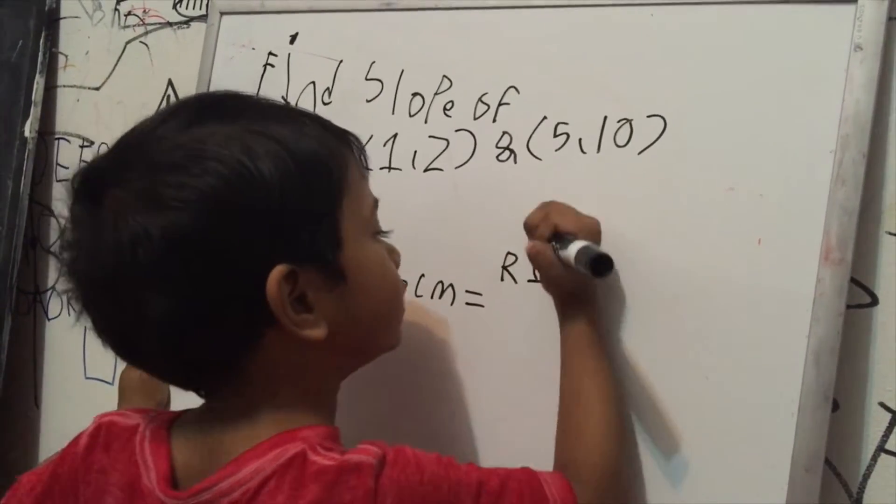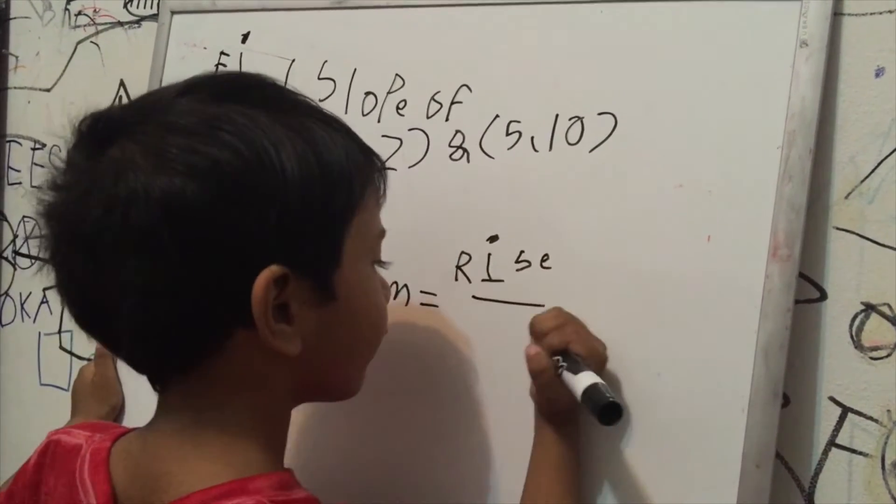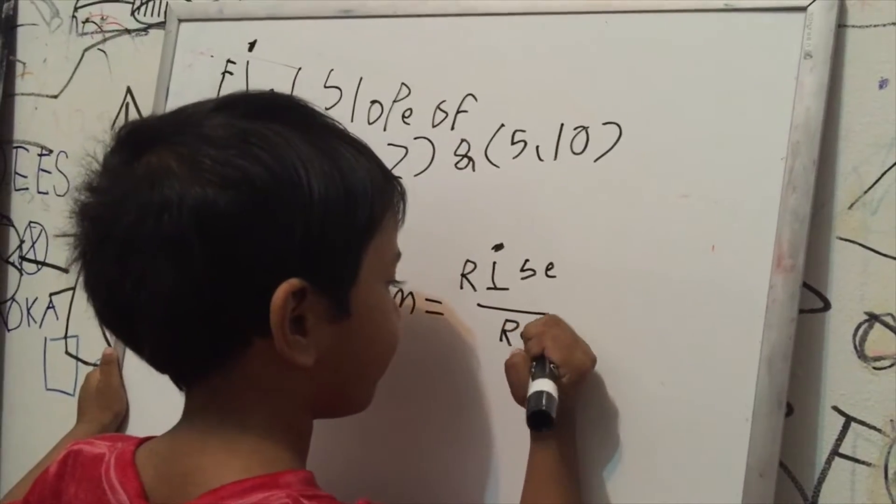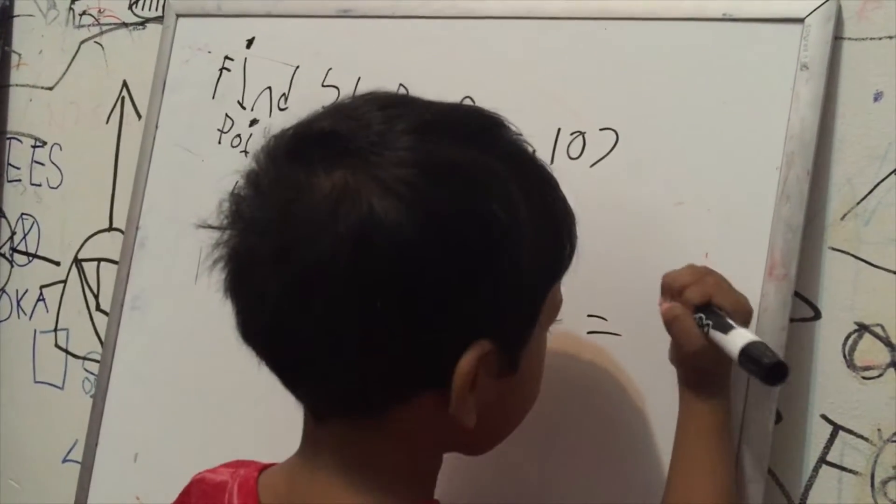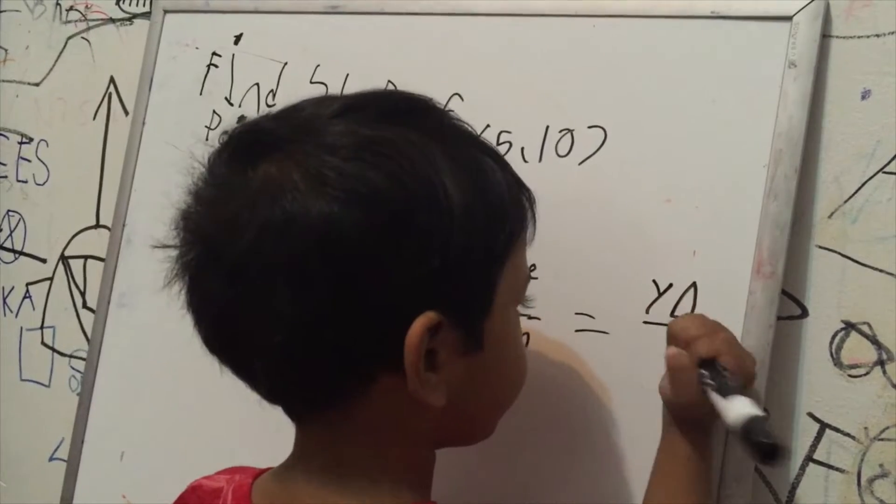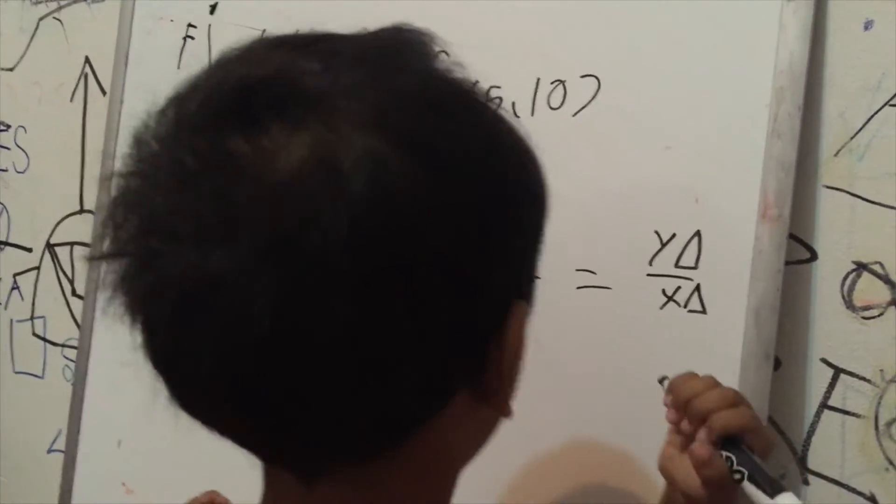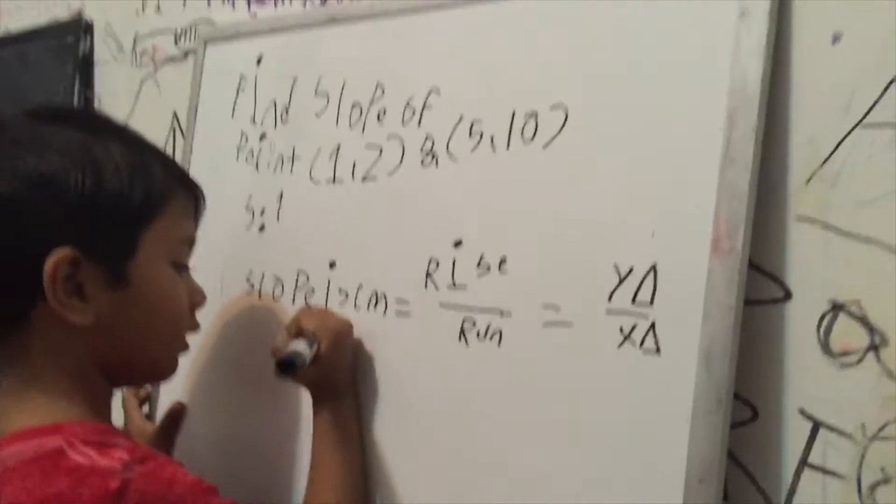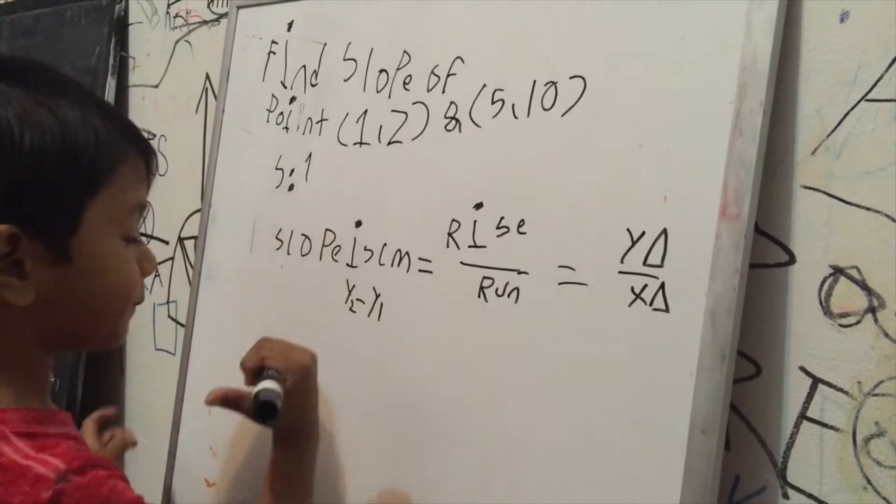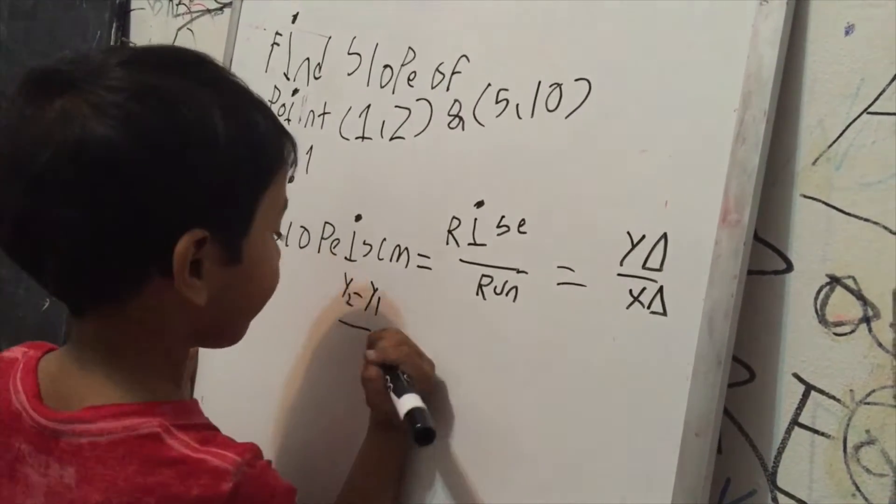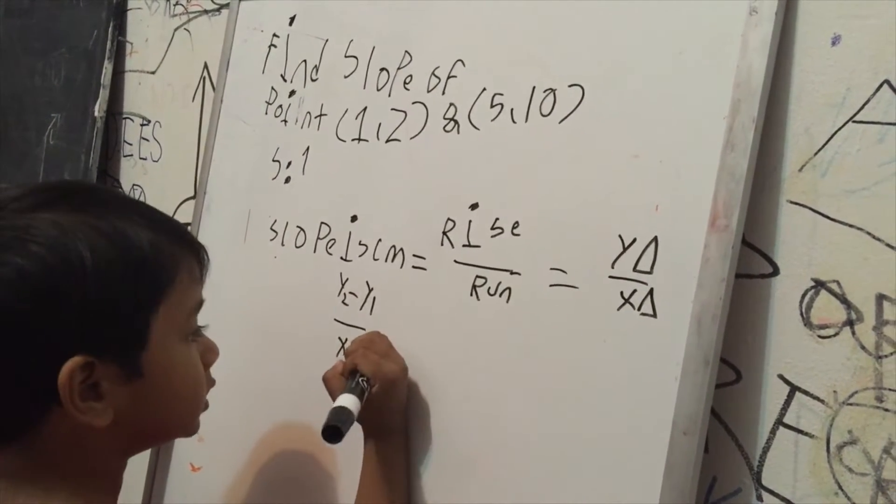Step 1, rise over run. Which is the rise right over the run. Which is y2 minus y1 over x2 minus x1.